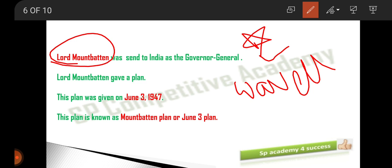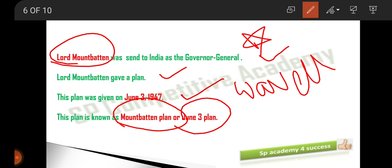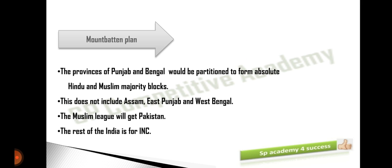Lord Mountbatten gave a plan to resolve the Muslim League issue. This plan was announced on June 3rd, 1947, and is known as the Mountbatten Plan or the June 3rd Plan — named after the date it was given. He came to India specifically for this purpose, to put forward proposals to resolve the issues raised by the Muslim League.